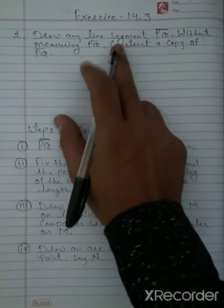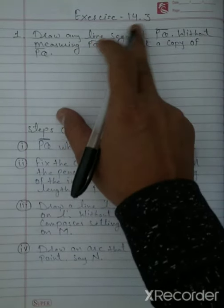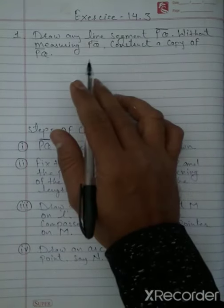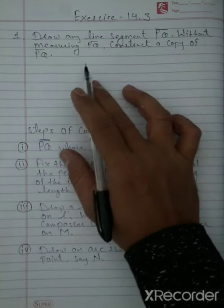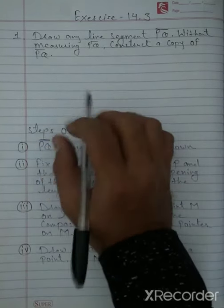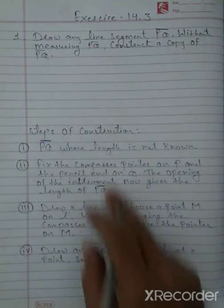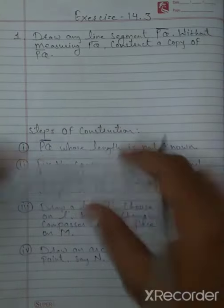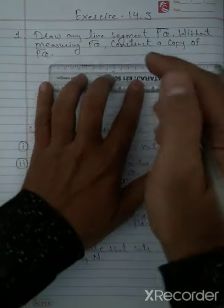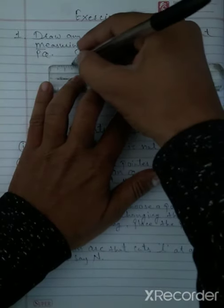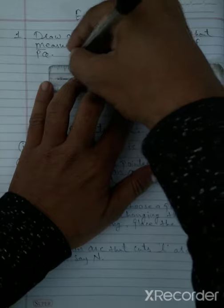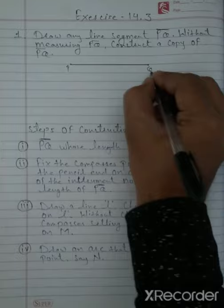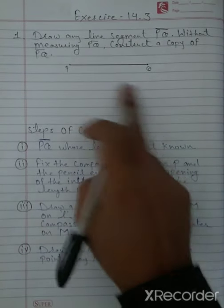Hello dear students, let's start the solution of Exercise 14.3, Question 1: Draw any line segment PQ without measuring PQ, then construct a copy of it. In the first step, we draw a line segment PQ whose length is not known.